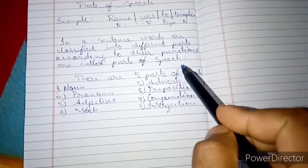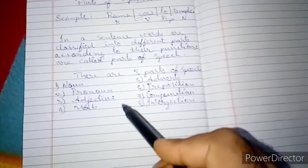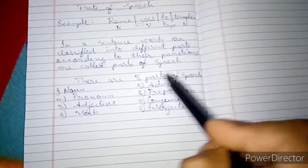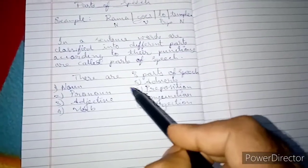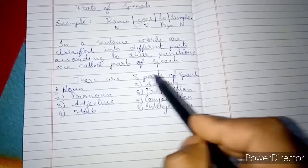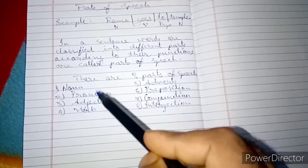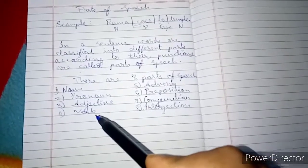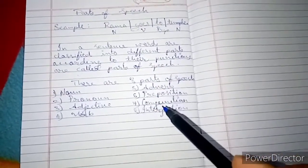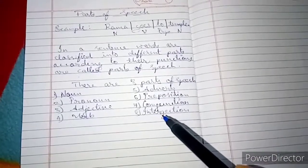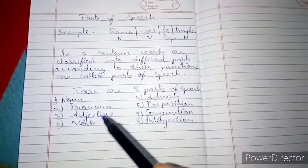How many parts of speech are there in English? There are eight parts of speech. We can also consider articles as a part of speech. The eight parts of speech are: noun, pronoun, adjective, verb, adverb, preposition, conjunction, and interjection. These are all eight parts of speech.